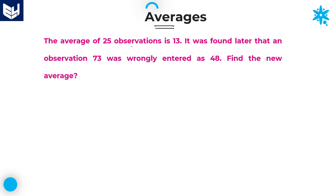The average of 25 observations is 13. It was found later that an observation 73 was wrongly entered as 48. Then find the new average. Here, according to the sentence, average of 25 observations is given as 13.